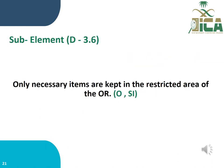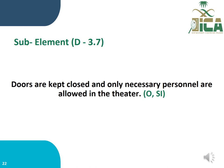Sub-element D3.6: Only necessary items are kept in the restricted area of the OR, and this is done by observation and staff interview. Sub-element D3.7: Doors are kept closed and only necessary personnel are allowed in the theater, and this is done by observation and staff interview.